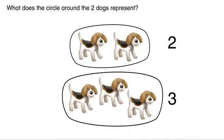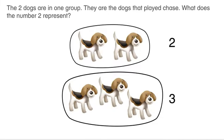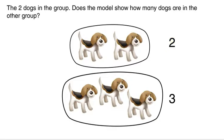What does the circle around the two dogs represent? The two dogs are in one group. They are the dogs that played chase. What does the number two represent? The two dogs in the group.